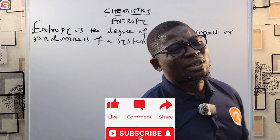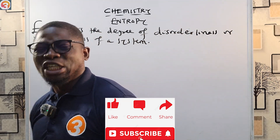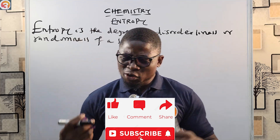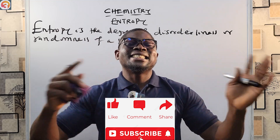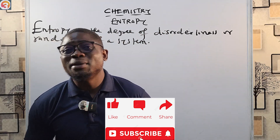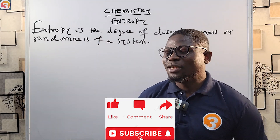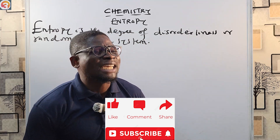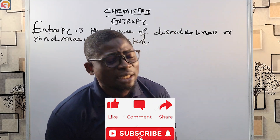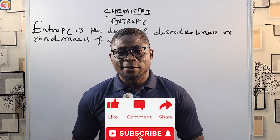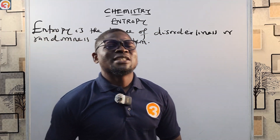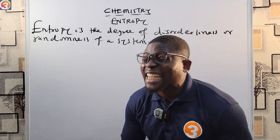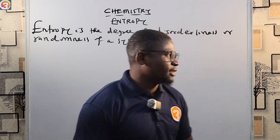Entropy talks about how disordered a system is. If you go to a place where everything is scattered, you can say that place is in a state of entropy. Like the marketplace, where everything is disorderly — people pushing each other, nothing is ordered. That kind of system is called a disordered system, and that is what is in a state of entropy.